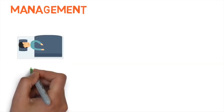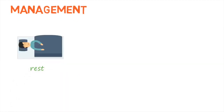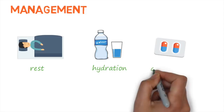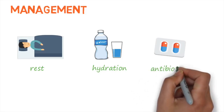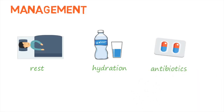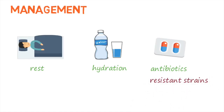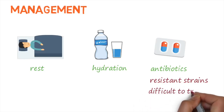Uncomplicated Salmonella infections are usually managed by rest and adequate hydration. Antibiotics are used for some high-risk groups, complicated cases, and also to treat Salmonella infections like typhoidal fevers. There are some Salmonella strains that are resistant to some antibacterial medication, which is a serious public health problem because these infections are difficult to treat.